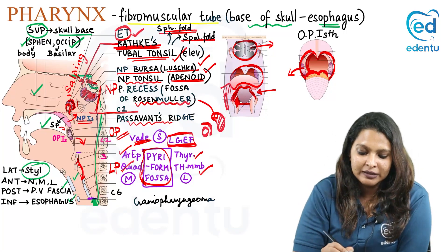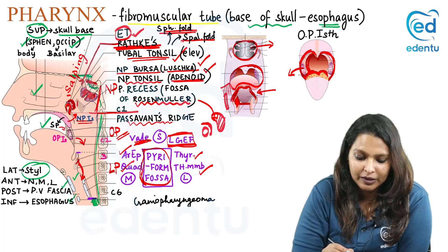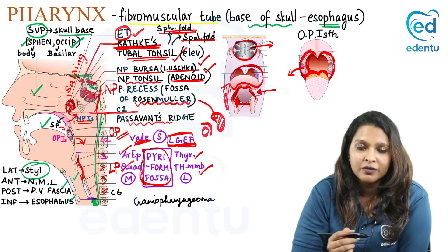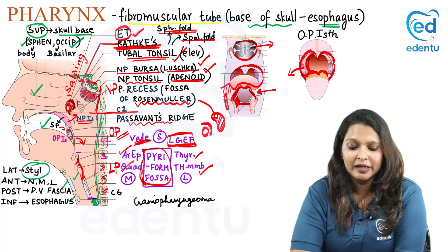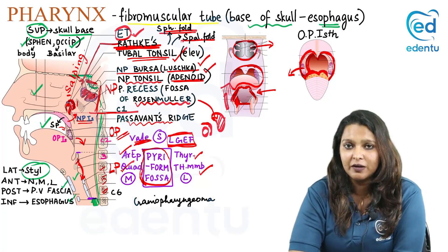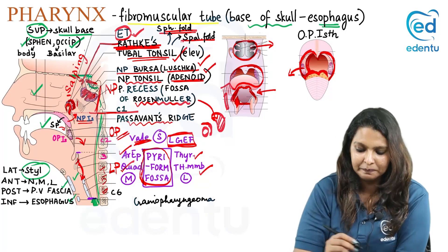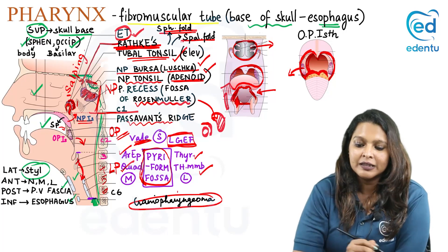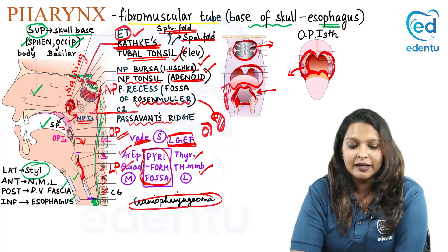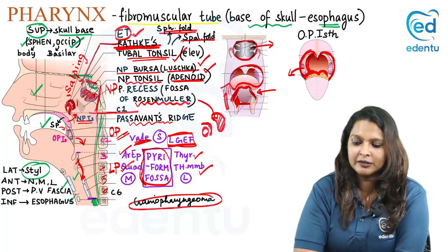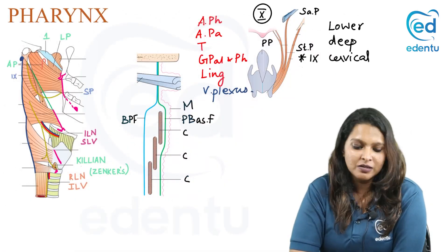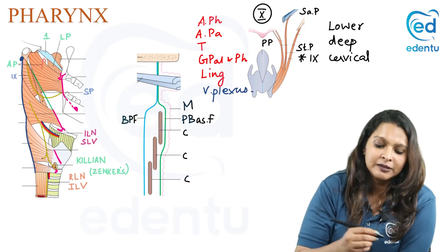The laryngopharynx lies opposite cervical vertebrae C4, 5, and 6, while the oropharynx lies opposite C2 and C3. Craniopharyngioma is a cancer that occurs in the nasopharynx. Now we will see about the muscles of the pharynx.